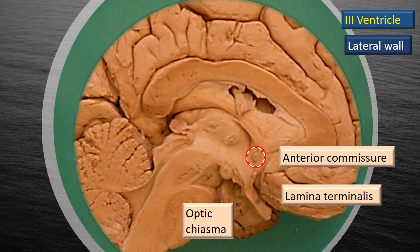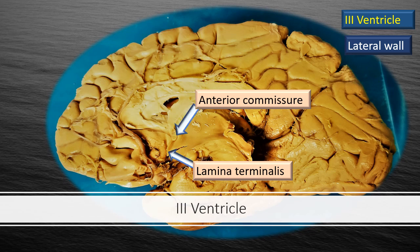The anterior commissure is located very close to the fornix, at the anterior wall of the third ventricle. Right below it is the lamina terminalis, which is embryologically the anterior-most end of the developing neural tube. The anterior commissure transmits white fibers to the opposite hemisphere and vice versa. When you trace the lamina terminalis down, it ends at the optic chiasma. Here is another brain photograph showing the anterior commissure and lamina terminalis in better contrast.